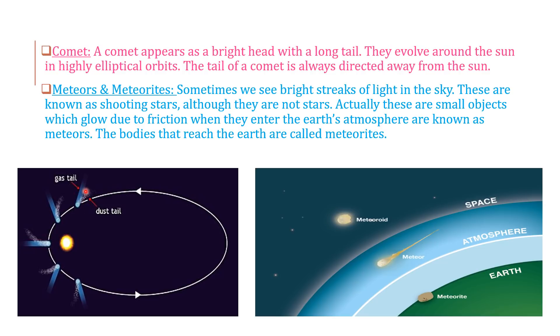This is the comet. This is the head. This is the tail. And they are evolving around the sun in elliptical orbits. Elliptical means it is an oval shape.